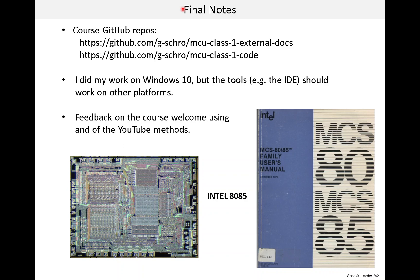For some final notes about this course: here are two GitHub repos. The first repo contains a collection of documents I used in the course. Normally you should get these documents directly from the source, like STMicroelectronics or ARM. The README file in the repo indicates the source of each file — I made a copy so I would always have the exact version I used in the lessons. The other repo is the course project code. As part of the course, we study this code and integrate it into the IDE, build it, and run it on the board.